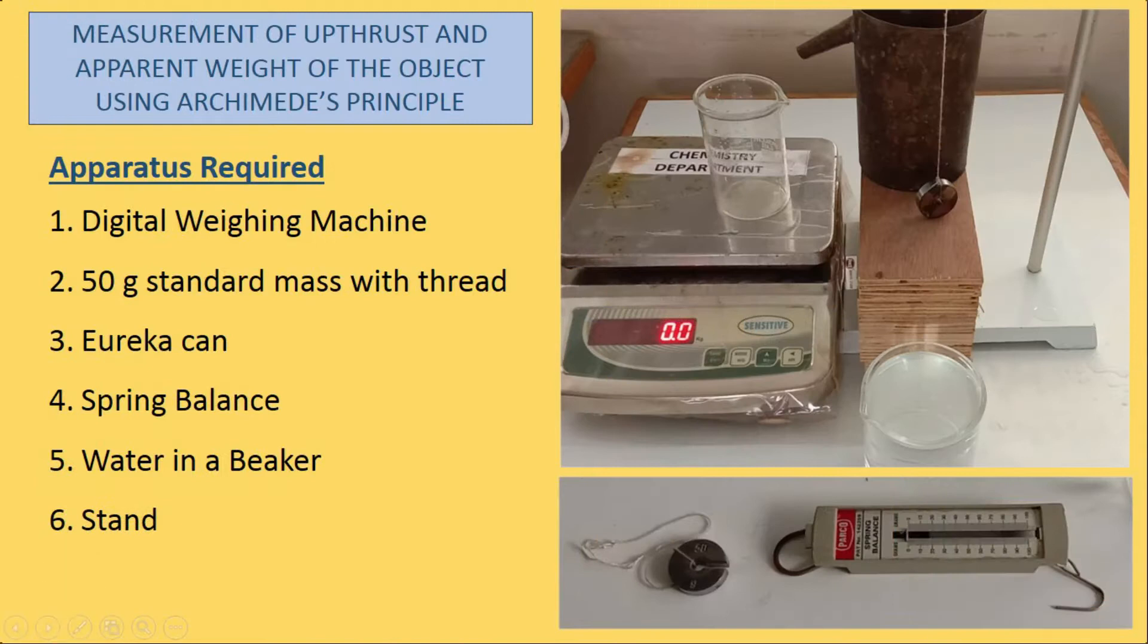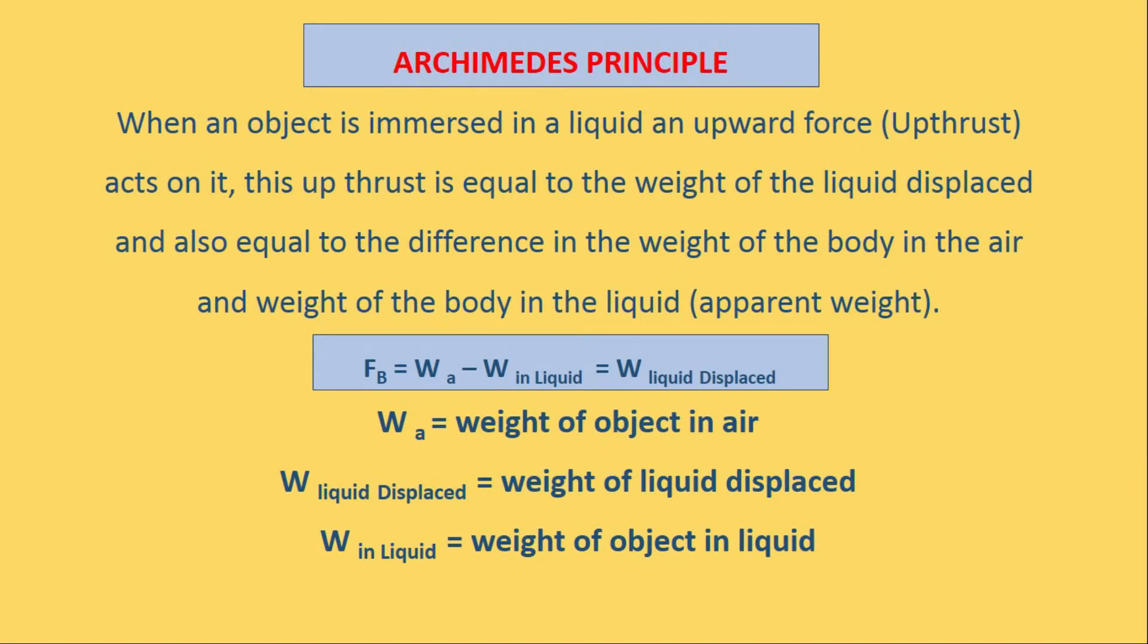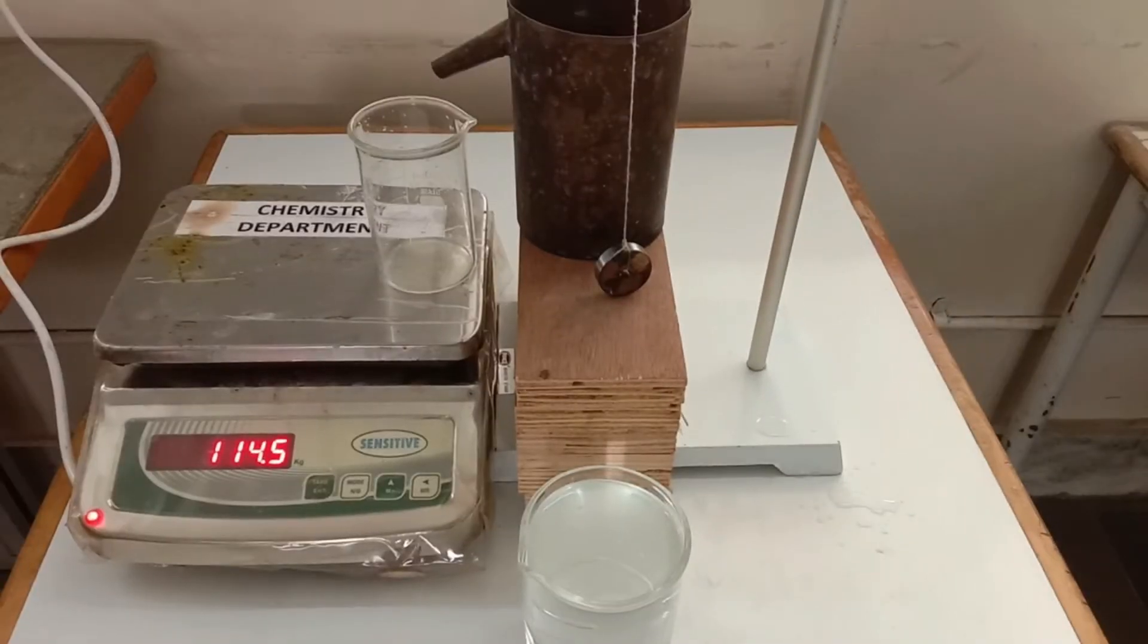Hello scientific audience. In this video, I am going to experimentally verify Archimedes' principle, which states that the upthrust acting on a body is equal to the weight of the liquid displaced, and is also equal to the weight of the object in air minus the weight of the object in water or any liquid.